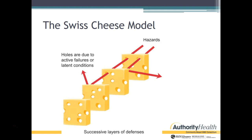Let's talk about the Swiss cheese model. If you need more information, go to your IHI modules or the IHI website. You can see slices of Swiss cheese with holes. Think of the stack of Swiss cheese as your patient safety defense system — these are the processes in place to minimize the potential for patient harm. The holes are either latent conditions or active failures, and hazards are things that are either violations or errors.